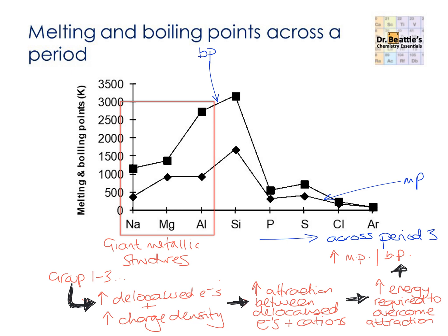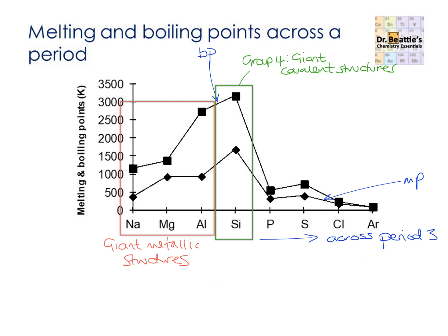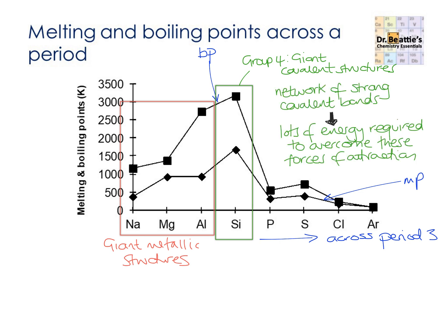Now we're going to focus on silicon, which is an example of a group 4 element. This would also apply to carbon in period 2. Group 4 elements — silicon for period 3 or carbon for period 2 — are giant covalent structures. When we are melting or boiling a giant covalent structure, we require lots of energy, as you can see — these are the peaks of both our melting point and boiling point trends. The reason is that we require lots of energy to overcome the network of very strong covalent bonds. In fact, covalent bonds are the strongest types of bonds that we have.